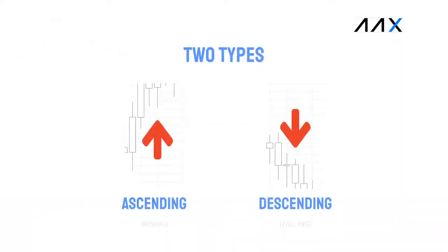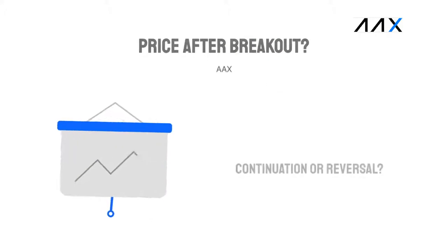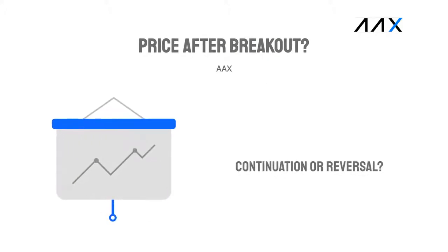In trading, there are two types of wedge formations: ascending and descending formations. Both can lead to the continuation and reversal of price, and this is dependent on the breakout direction.